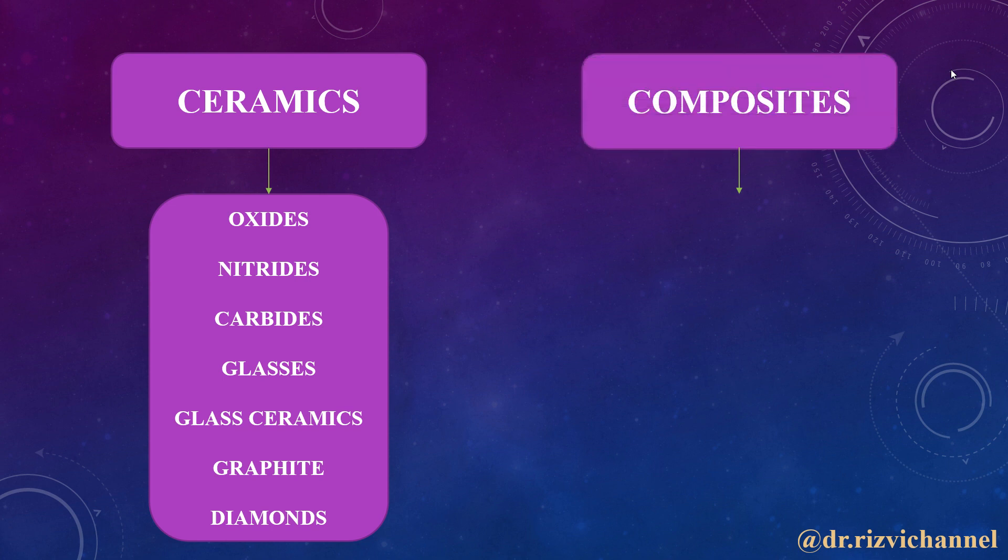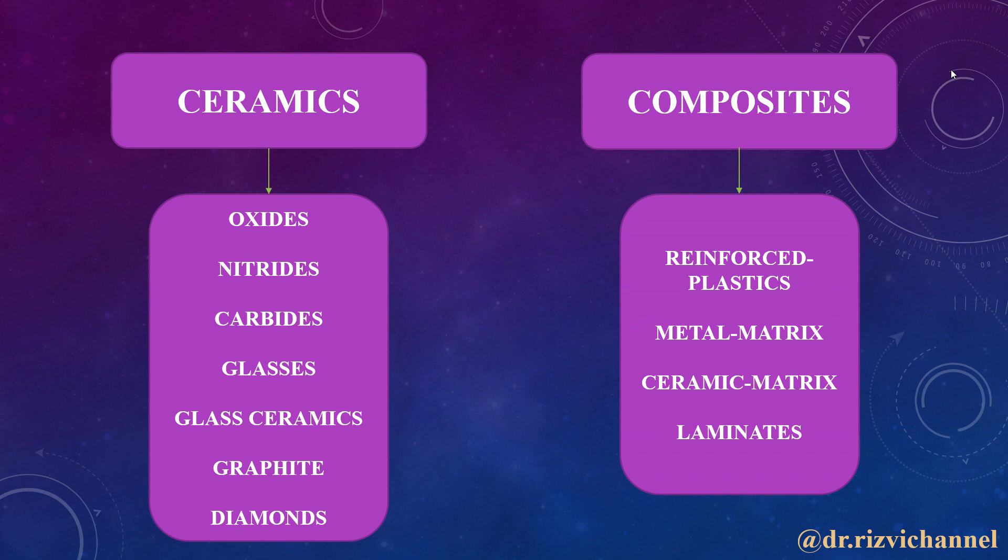The last classification of engineering materials is composites. Composites basically comprise reinforced plastics, metal matrix, ceramics matrix, and laminates.